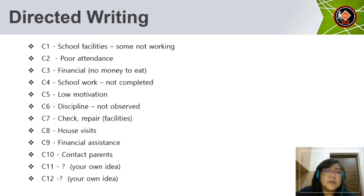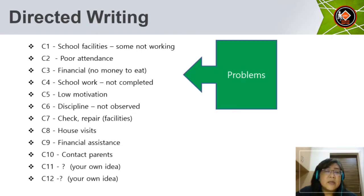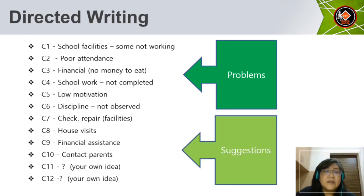Let's look at the content points. C1: school facilities, some not working. C2: poor attendance. C3: financial, no money to eat. C4: school work not completed. C5: low motivation. C6: discipline not observed. These are the problems. C7: check and repair facilities. C8: house visits. C9: financial assistance. C10: contact parents. C11 and C12: your own ideas. These are the suggestions.